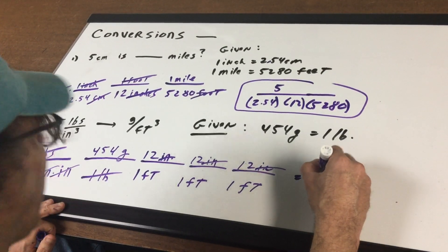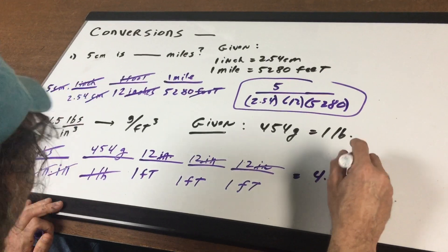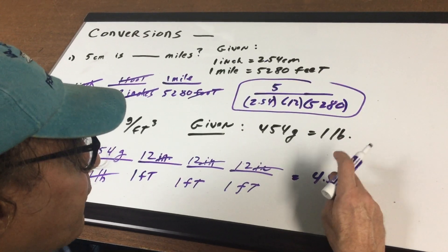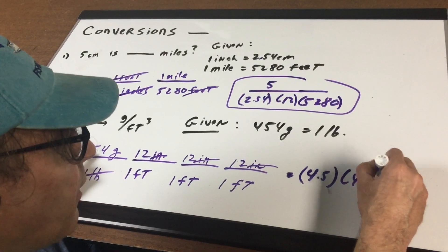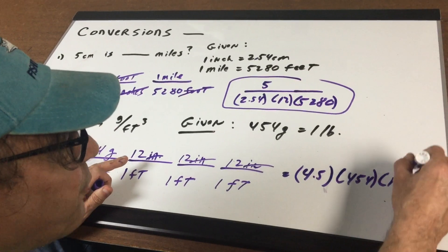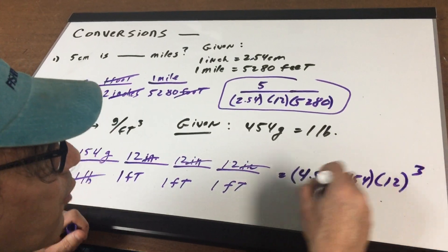So it's going to be 4.5 multiplied by 454 times 12 times 12 or 12 cubed.